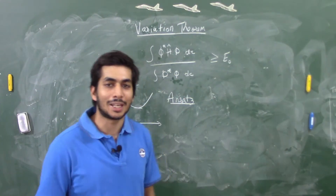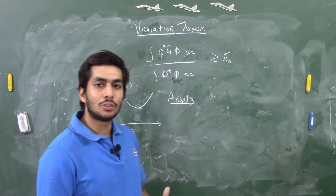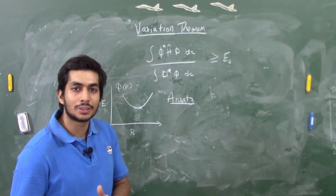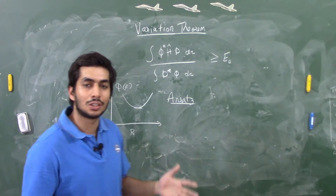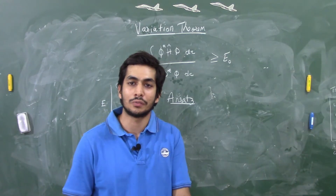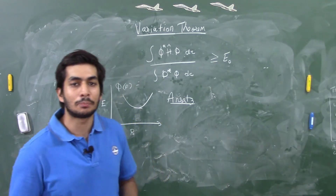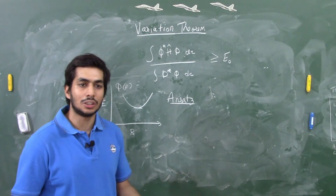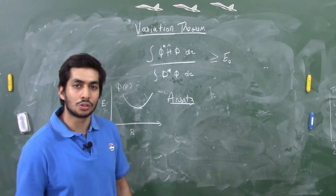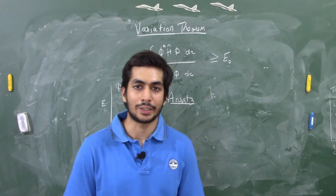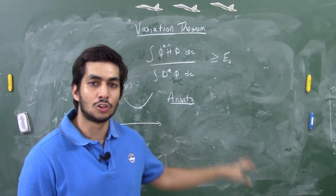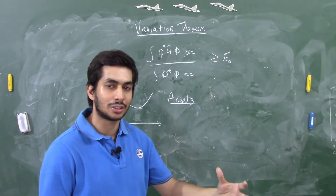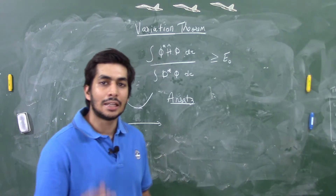Variation theorem has certain drawbacks. The first: we can reach a minima, but we don't know how close we are to the original energy. There's no way to know how close we are. We can try different trial wave functions and take whichever gives the lowest energy, but we still can't quantify that closeness. The second drawback: this form of variation theorem cannot be used for excited states — only for the ground state. That's where linear variation theorem comes in.